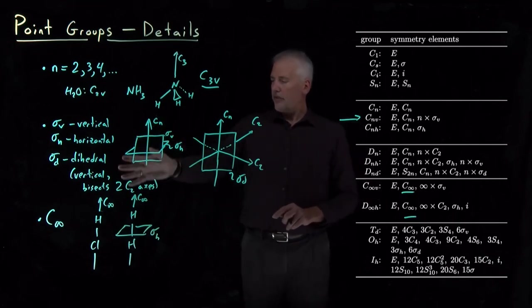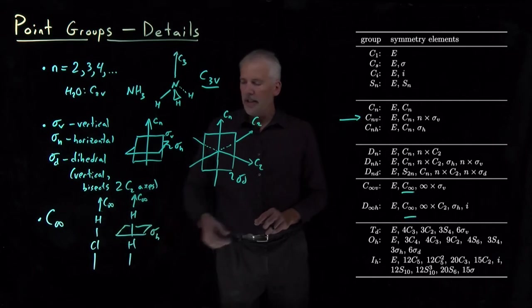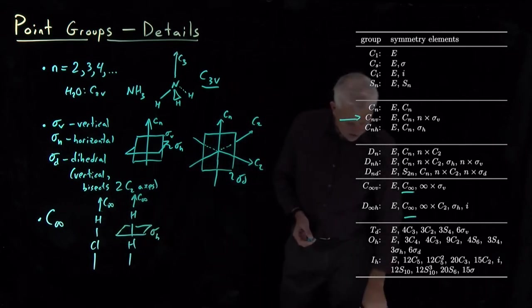We have several different types of planes. We have the C infinity rotational axis. What else should I explain?